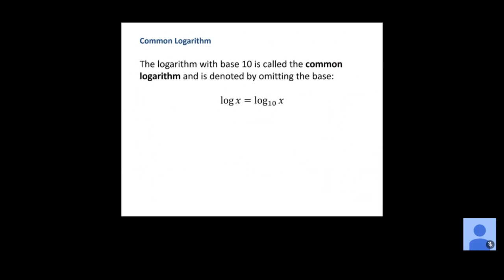Now common logarithms. Any log with a base of 10 is called the common logarithm. Instead of writing base 10 every time, we can just write log of x. Whenever you see log x, the understood base is 10. If you look at your calculator, there is a log key — that log key is automatically a base 10 log. Some newer calculators allow you to change that base, but pressing the log key in general gives you a base 10 log.